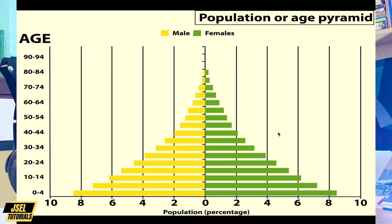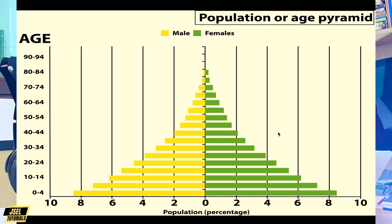You can place the age group labels in the middle to create a clear space, and use different colors for each side. The yellow color represents males and a different color represents females on the other side. The bars show the percentages or population counts for each age group.